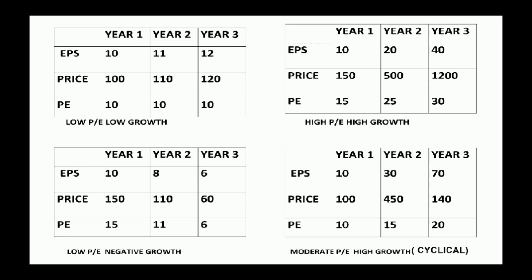We also have companies with negative growth. The PE is not straightforward for such businesses. This is the fourth type of company — where PE and EPS earnings results vary year to year, and the price of the company changes rapidly. This stock is in a cyclical sector.